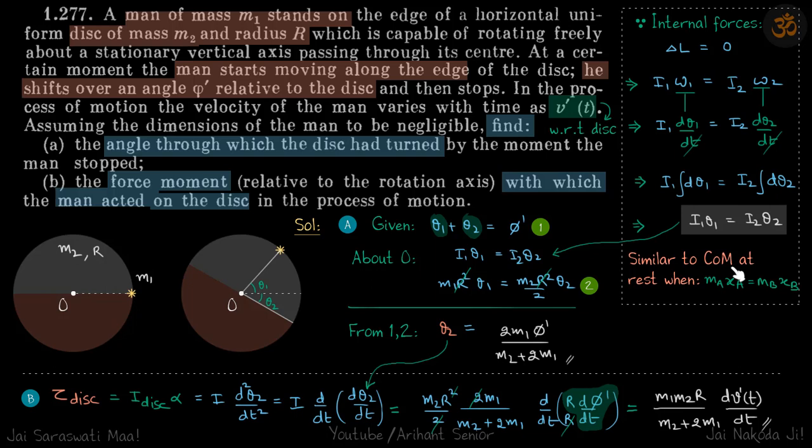Wherever the center of mass is, it will remain at rest. If the man travels towards left with xa, the boat will travel towards right with xb. Similarly, whichever has i1, if it is getting changed by theta 1, then the direction of the object with i2 will get changed by theta 2, so that the overall analogous center of mass in rotation will remain at the same position. Think about it. Even mathematically, we have derived i1 theta 1 equals i2 theta 2.